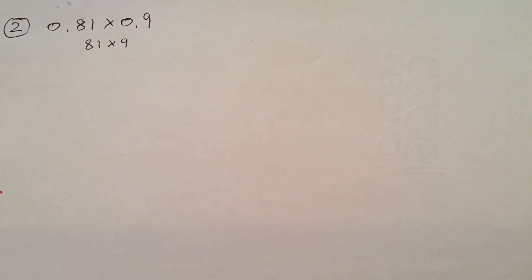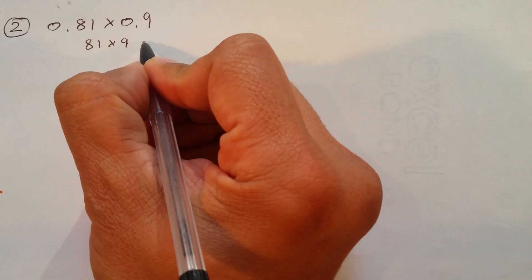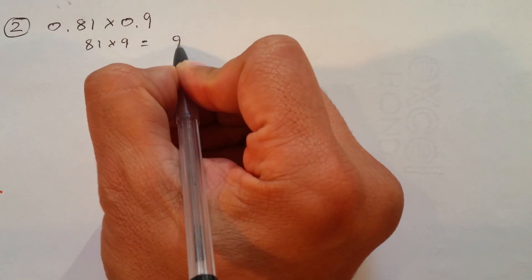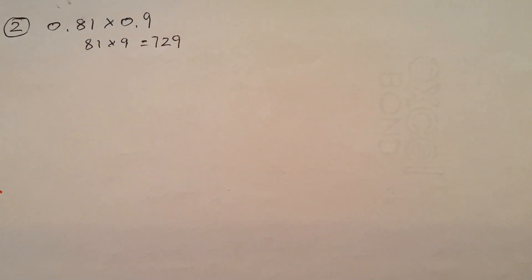We will just do 81 times 9. If you are confused, use the above column method, what we did previously. Or, you can just multiply. 9 times 1, which is 9. 8 times 9, which is 72. That's it.